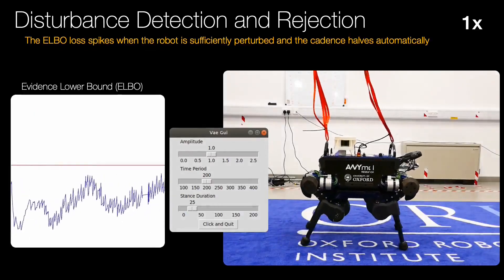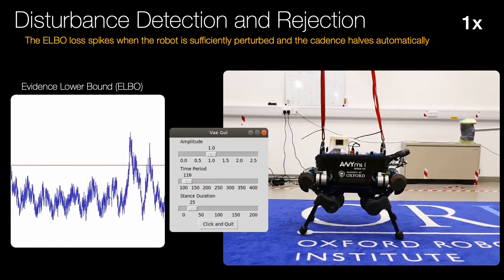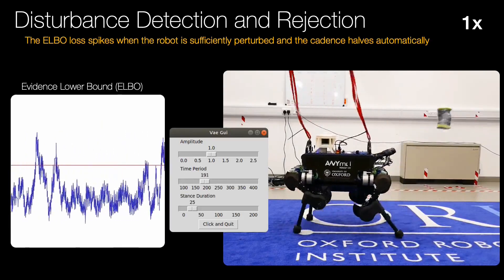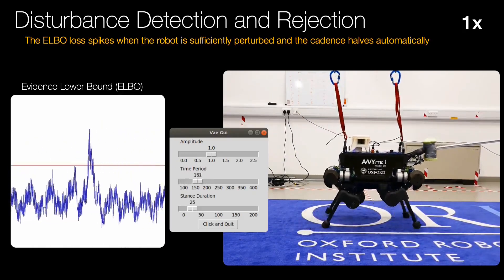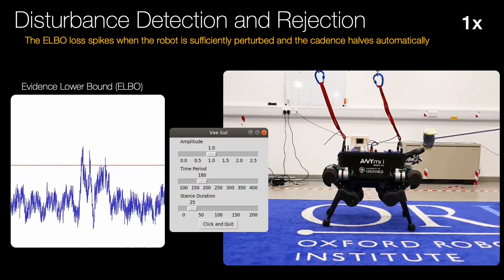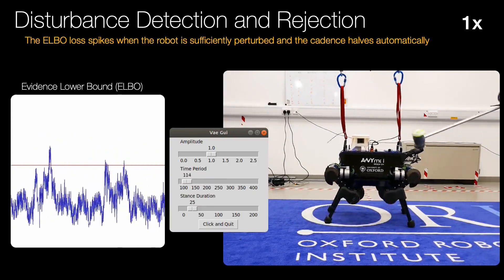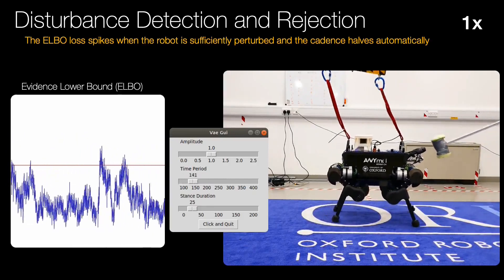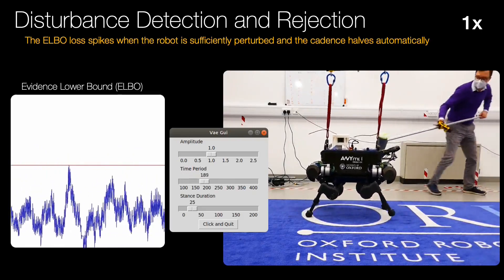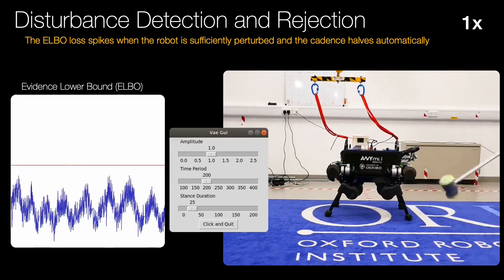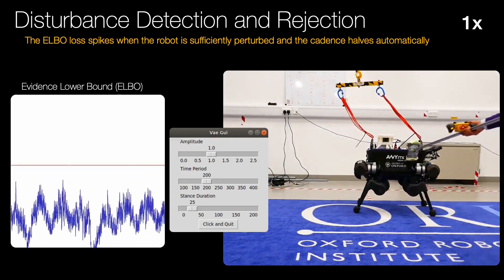Next, we show the ELBO loss while the robot is pushed and recovers as described. Please note that not all disturbances are significant enough to require a recovery response. Only disturbances which are large enough to surpass the threshold cause an increase in cadence.